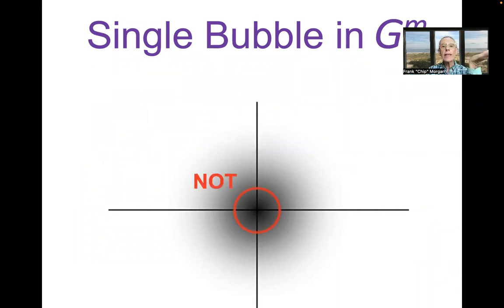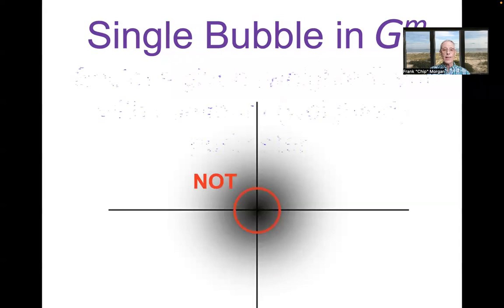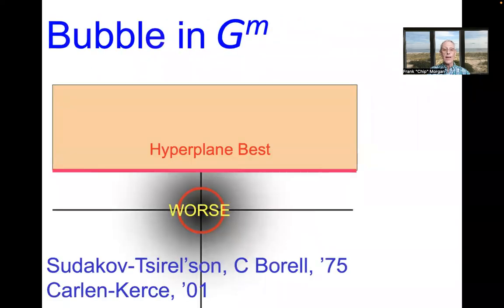So a sphere about the origin? No, it's not. That is, interestingly enough, that is not the winner. The winner is something simpler than a sphere, than a round sphere. Namely, a flat hyperplane. Now, a hyperplane has finite weighted volume because of the decay of the density as you move away from the origin. It encloses some fraction of the unit volume of the whole space above it. If you want to enclose more area, you just move it down. If you want to enclose less volume, you just move it up. Yeah, the proof of this goes back almost 50 years.